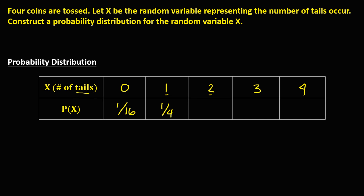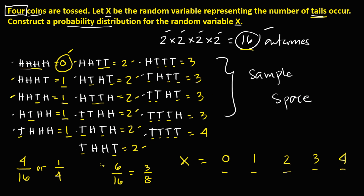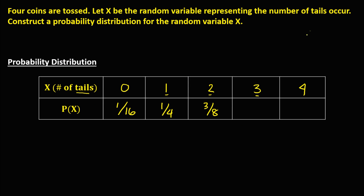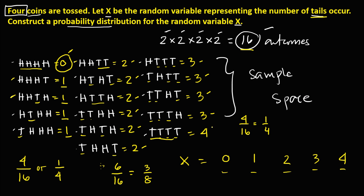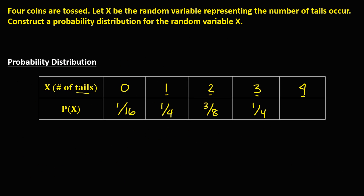For two tails, in the sample space we have 1, 2, 3, 4, 5, 6 — so that's 6 out of 16, which reduces to 3/8. So the probability that two tails occur is 3/8. For three tails, we have 1, 2, 3, 4 — so that's 4 out of 16, which reduces to 1/4. For four tails, we have 1 outcome, so that's 1 out of 16.